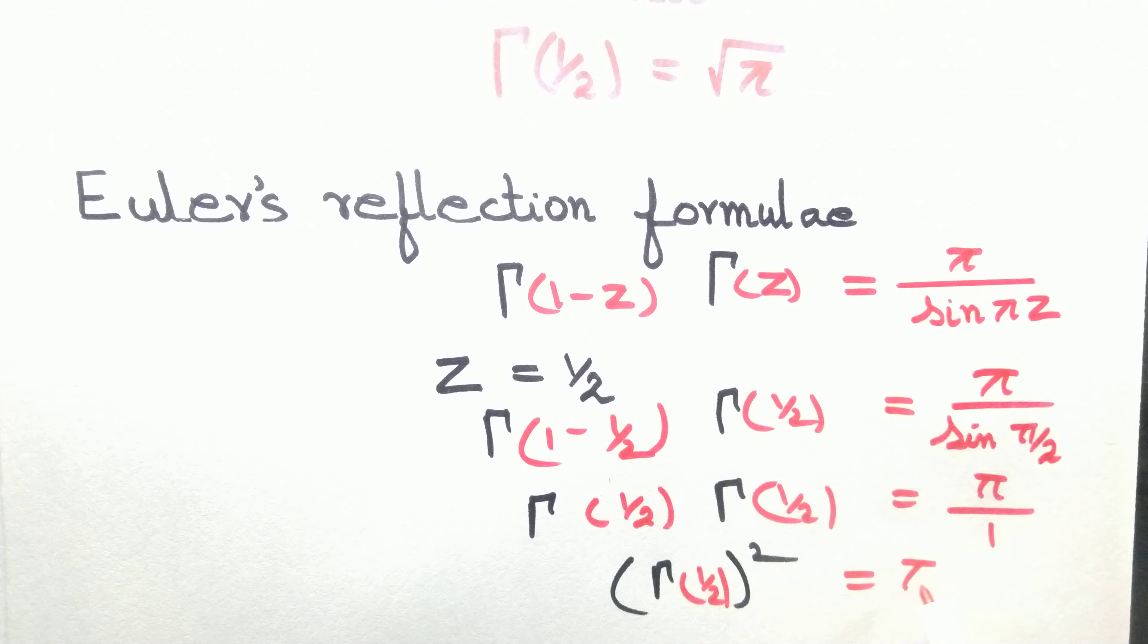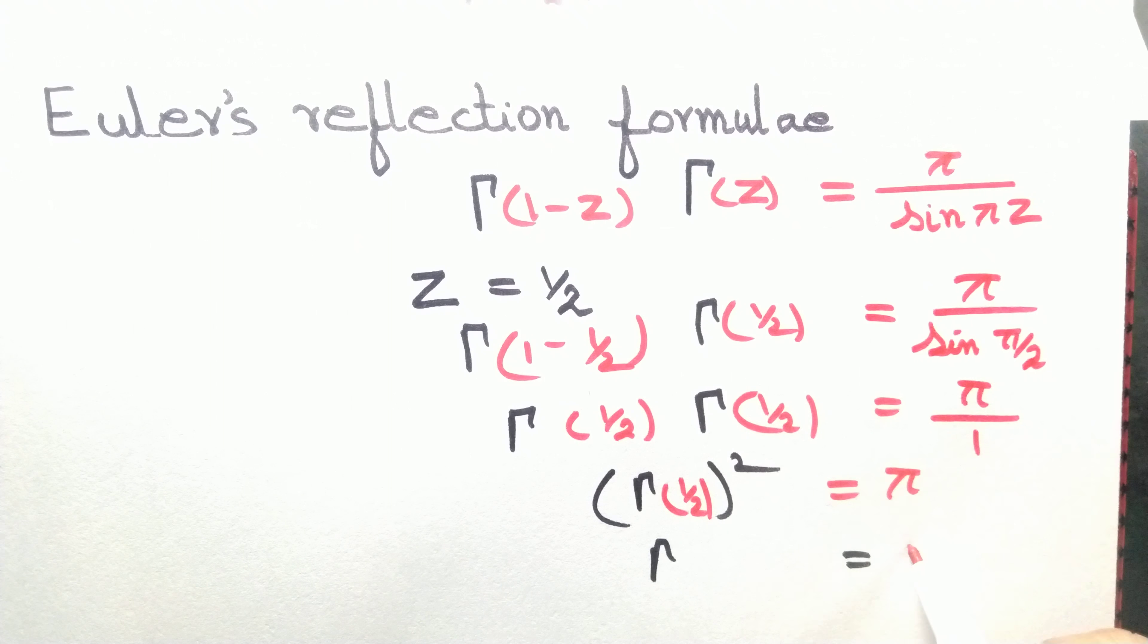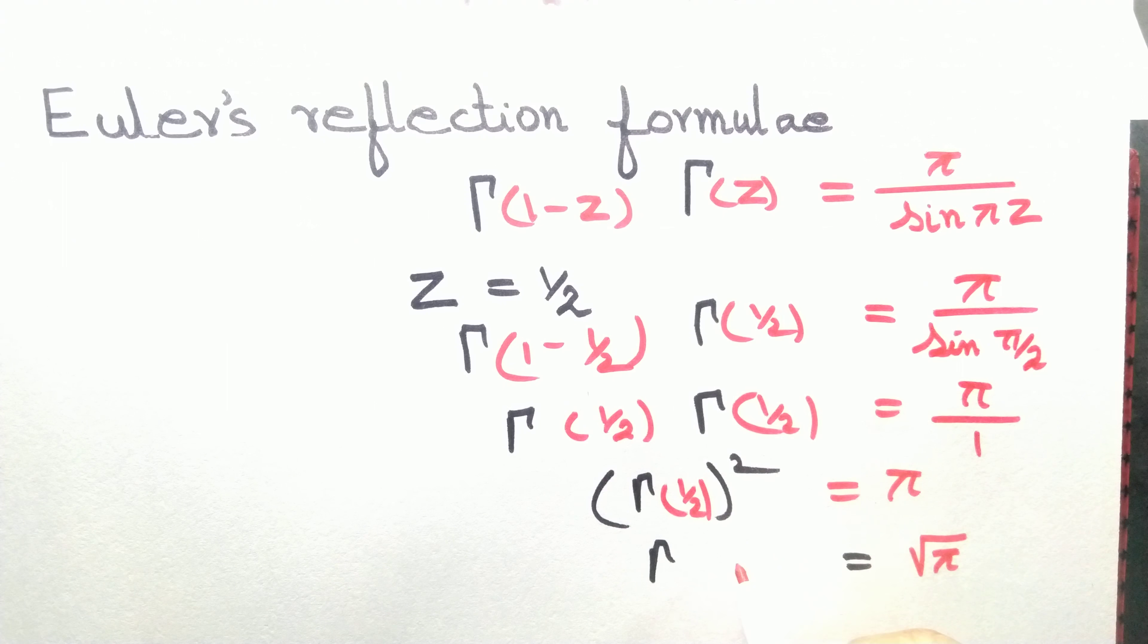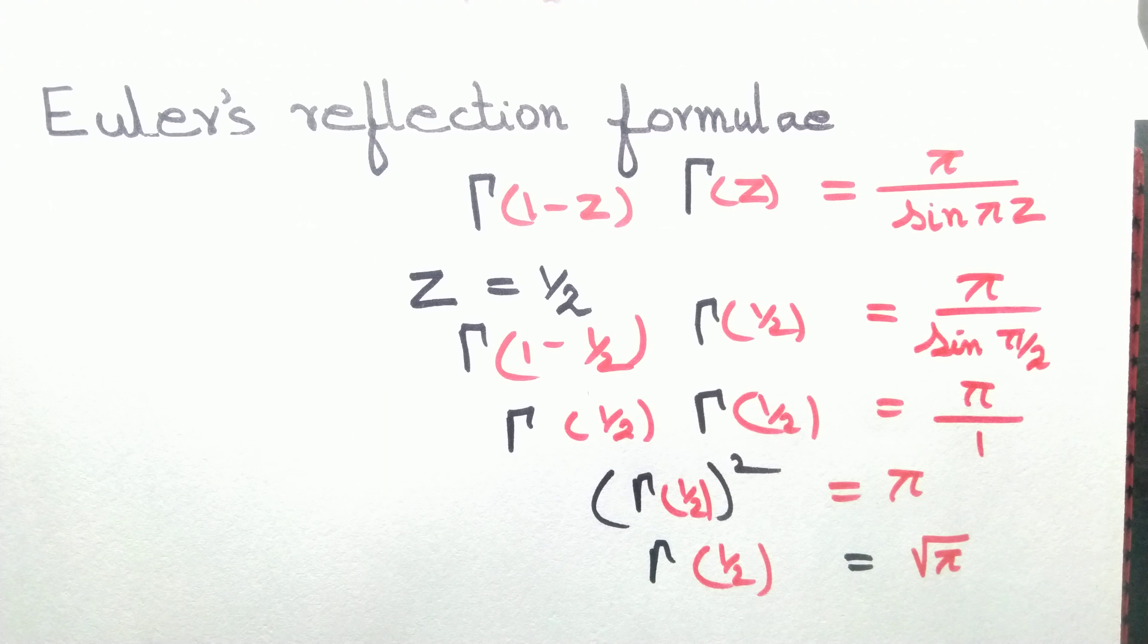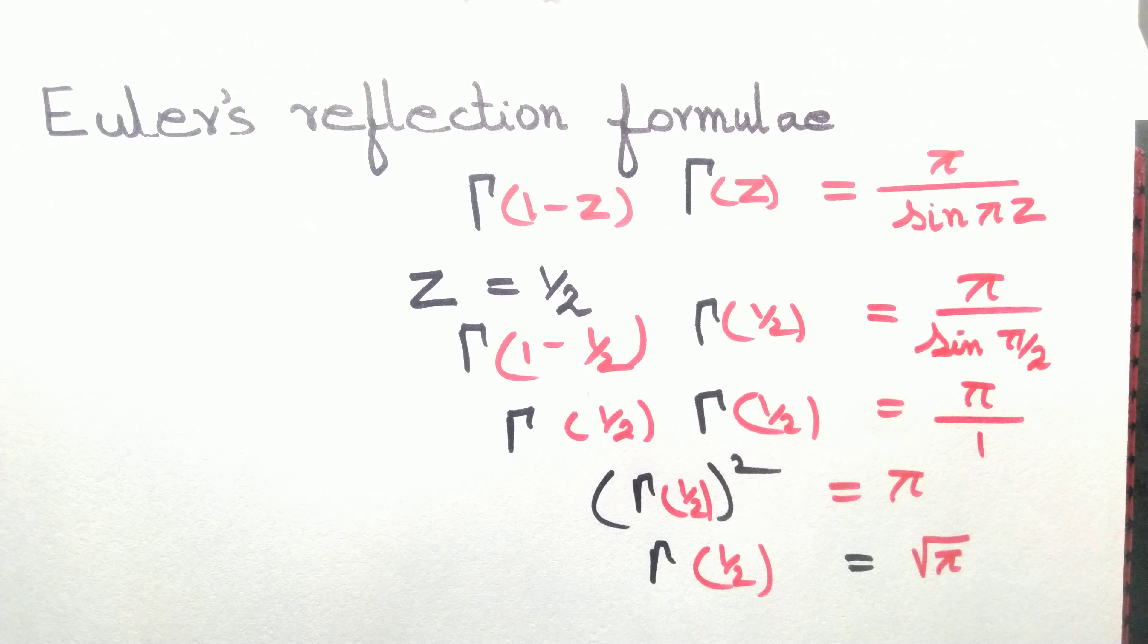Now we take the square root of both sides to obtain gamma of half equal to root pi. Well done, we have obtained the famous equality.